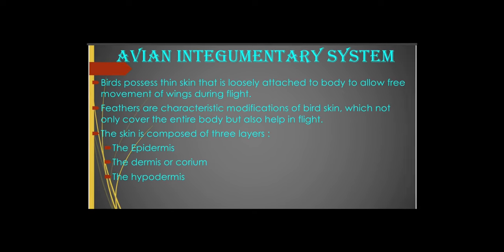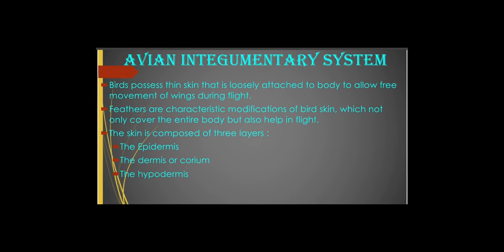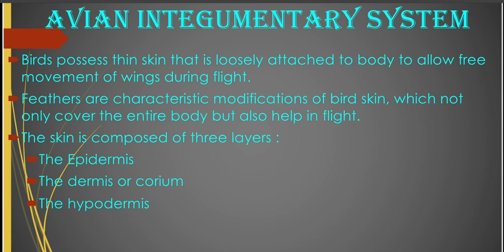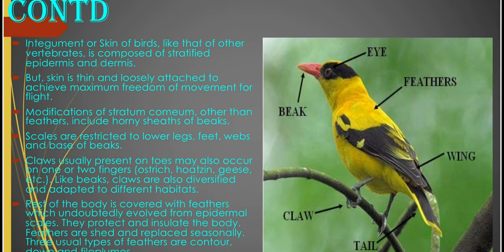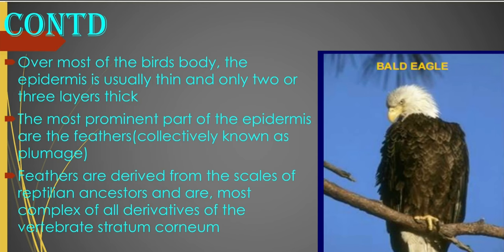You have the epidermis, which is the outermost layer. Deep to the epidermis, you have the dermis. The deepest of the layers is the hypodermis. The integument or skin of the birds, like that of other vertebrates, is composed of stratified epidermis and dermis, but the skin is thin and loosely attached to achieve maximum freedom of movement for flight.